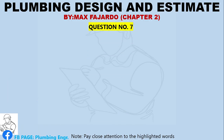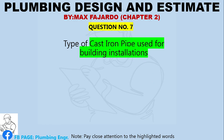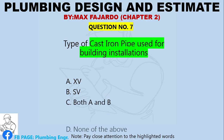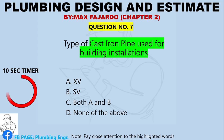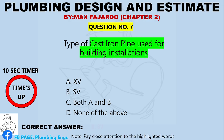Question Number 7. Type of cast iron pipe used for building installations. A. XV. B. SV. C. Both A and B. D. None of the above. Correct answer: Letter B, SV.